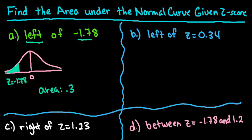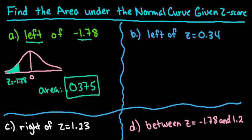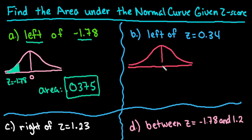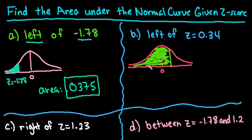So the answer is 0.0375. For the second example, it's the same process, but this time it's a positive z-score, which means it's to the right-hand side of the mean. Since we're looking for everything to the left of this value, it always helps to draw a picture so you can see what's happening.